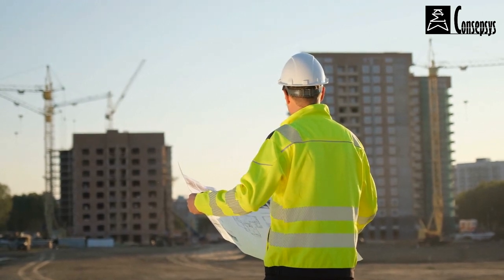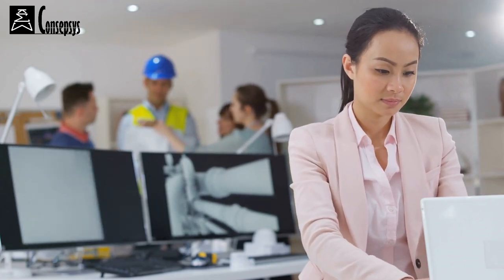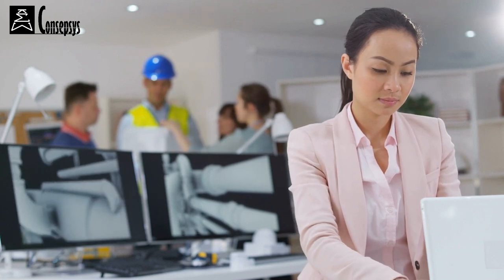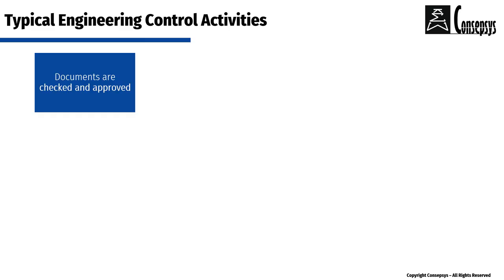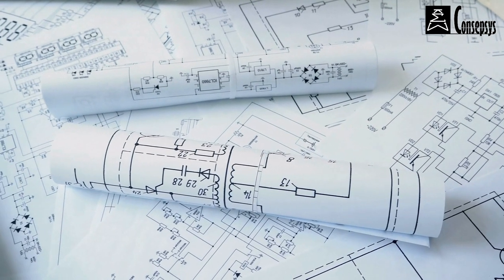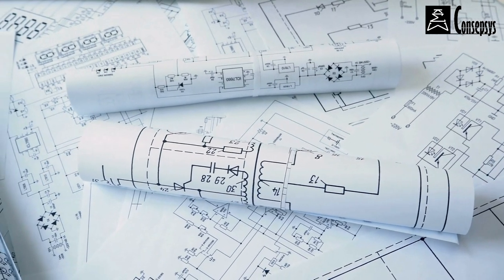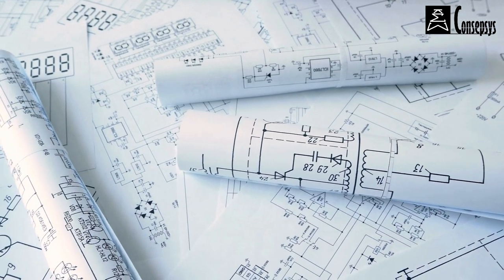Examples of typical engineering control activities which have an impact or an interface with document control include: ensuring that documents are checked and approved through appropriate protocols; ensuring that documents are produced with appropriate standards, specifications, scopes of work and procedures; and verification of the internal technical consistency of all interlinked documents.